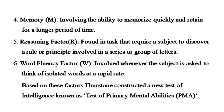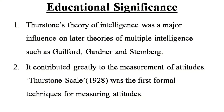Based on these factors, Thurston constructed a new test of intelligence, known as test of primary mental abilities, i.e., PMA. In conclusion to this theory, let us look at educational significance. 1. Thurston's theory of intelligence was a major influence on later theories of multiple intelligence, such as Guilford, Gardner, and Sternberg. 2. It contributed greatly to the measurement of attitudes. Thurston's scale, which was developed in the year 1928, was the first formal technique for measuring attitudes.